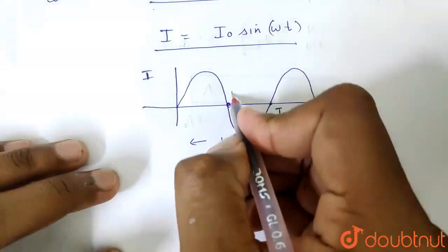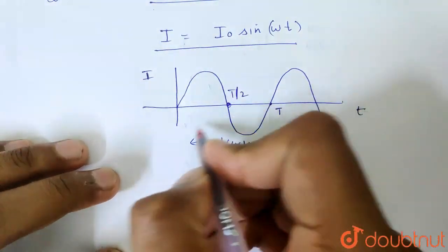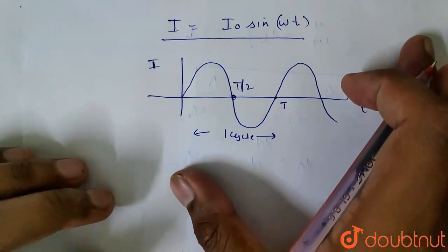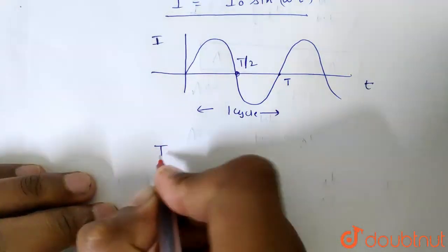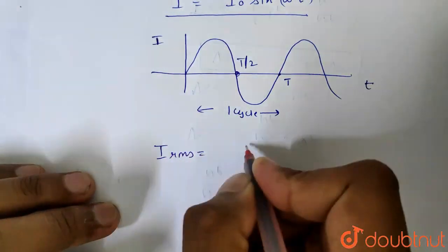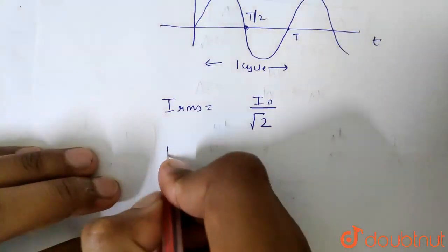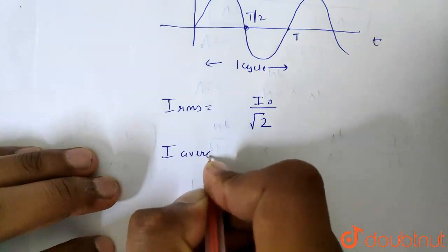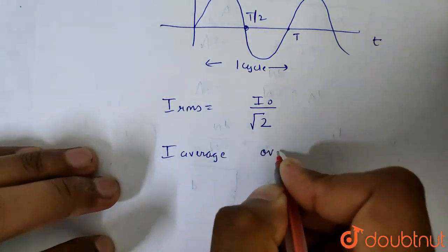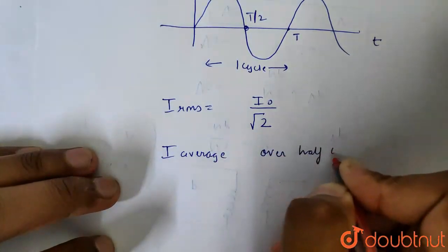So this is the ratio of RMS value and average value. We know that the value of RMS is I0 by root 2, and the average value is over the positive half cycle.